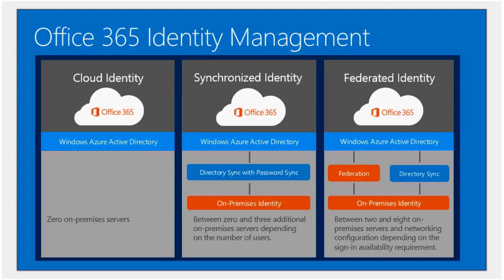The second model is synchronized identity, where a tool called DirSync runs on a server in your organization and synchronizes your on-premises Active Directory up into Office 365. In this model, all editing of users is done on premises and we synchronize the user details and a secured hash of the password up into Office 365.